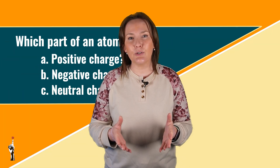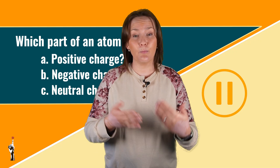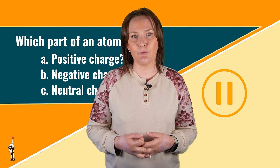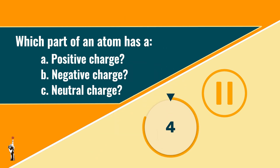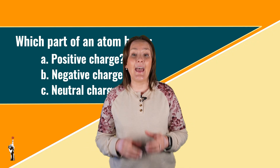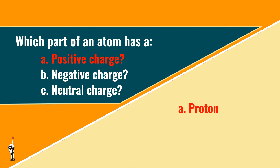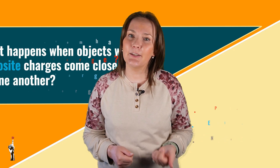Let's do an activity together. Answer the following questions and see if you can remember all the answers. For the first question: an atom with a positive charge is known as a proton, an atom with a negative charge is known as an electron, and an atom with a neutral charge is called a neutron.